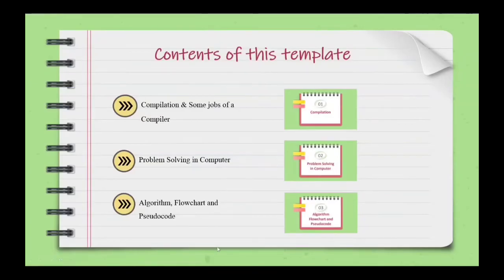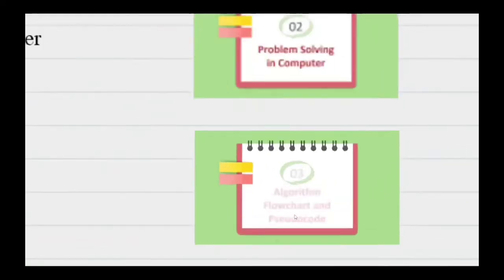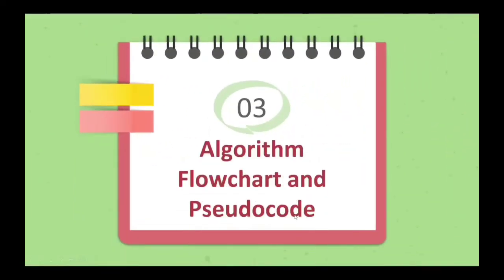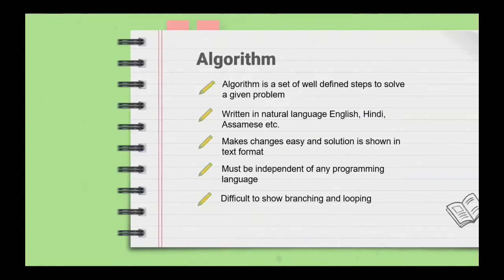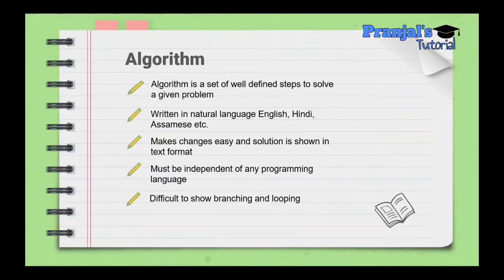Next we cover algorithm, flowchart, and pseudocode. An algorithm is a set of well-defined steps to solve a given problem. These well-defined steps that we use to solve a given problem are collectively known as an algorithm.